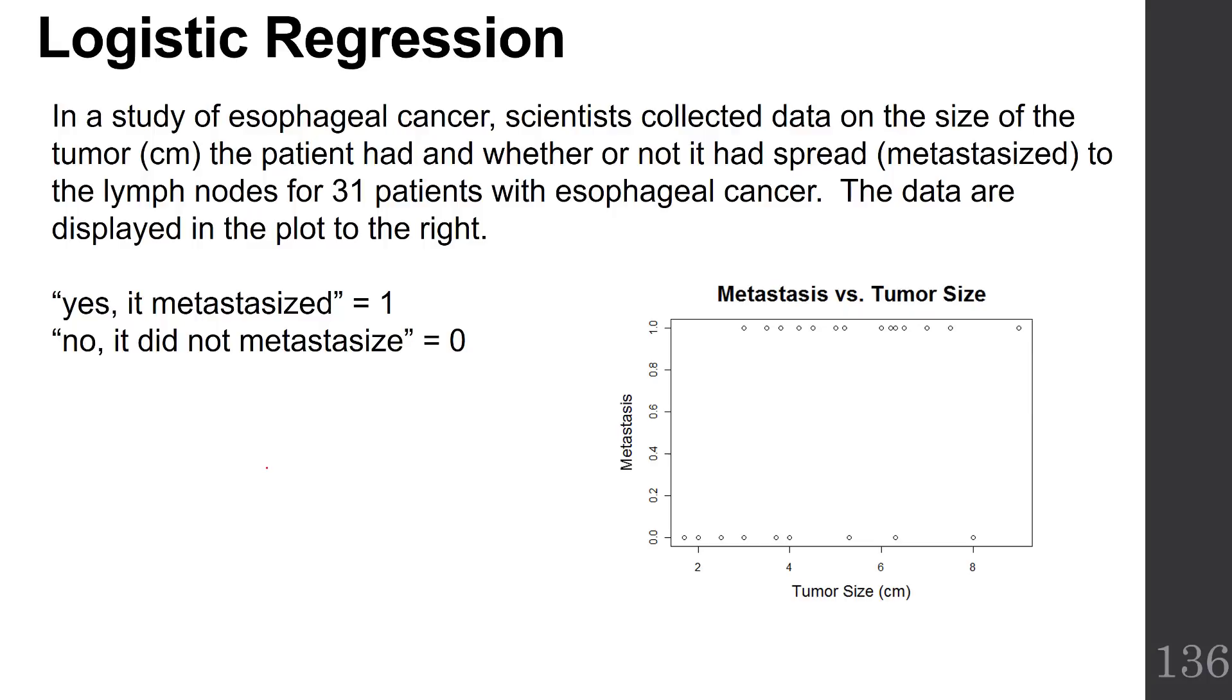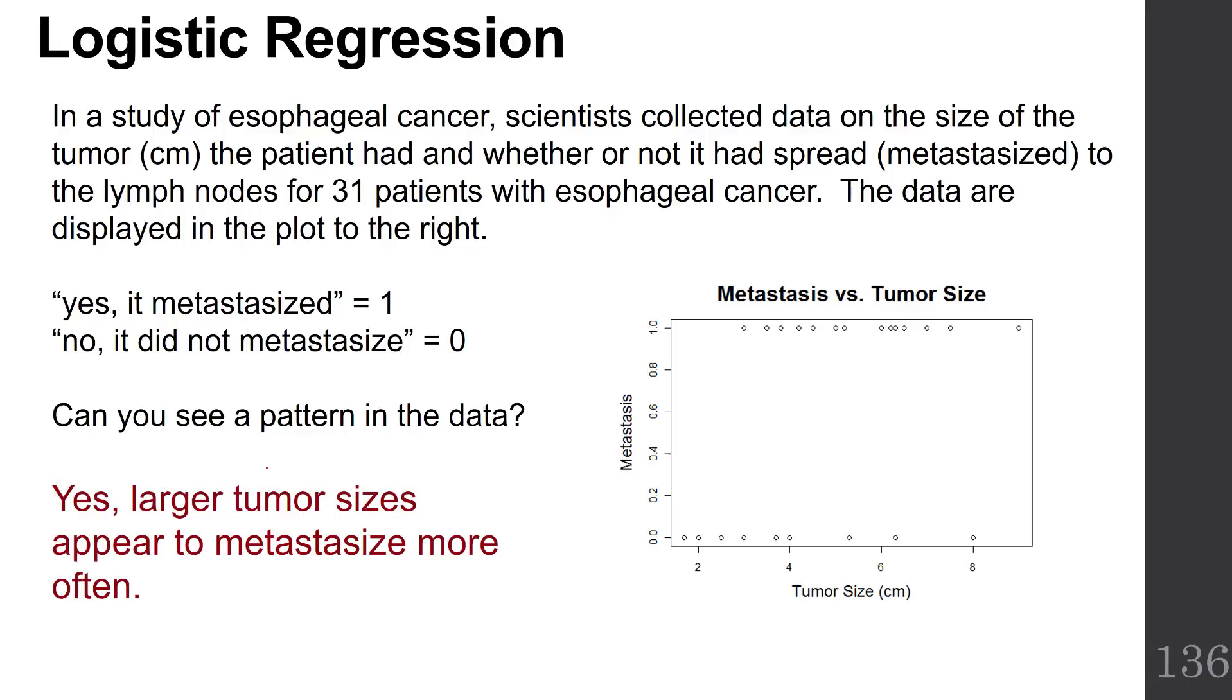A 1 means yes, it metastasized, and a 0 means no, it did not metastasize. Notice that it does look like there's a little bit of a relationship. Smaller tumor sizes are associated with more zeros for not metastasizing, and larger tumor sizes seem to be associated with more metastases. So the larger tumor sizes appear to metastasize more often.